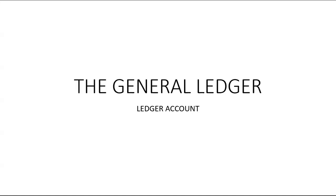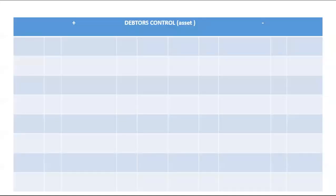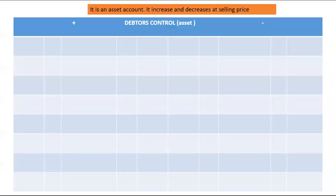The first general ledger account we're going to deal with here will be debtors control. Debtors control is an asset — it represents what is being owed to the business by customers. Everyone that bought on credit will be recorded under debtors control, whether they've paid or whether they are buying on credit.